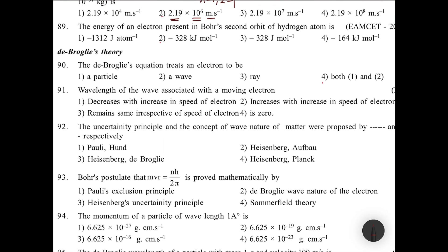The energy of an electron present in Bohr's second orbit of hydrogen atom: for second orbit, the formula is -1312 × z²/n². So -1312 × 1²/2² equals -328 kJ/mol. This is the formula: -1312 × z²/n² which equals -328.